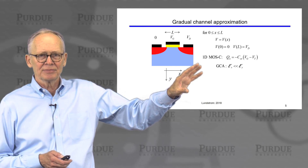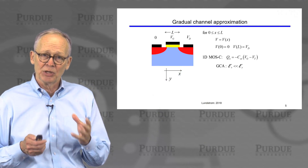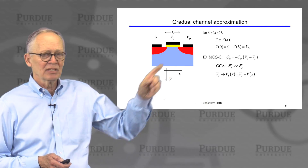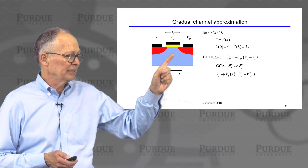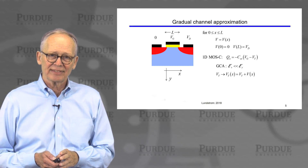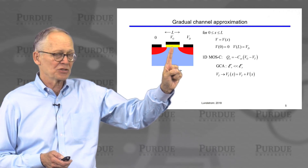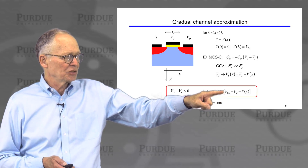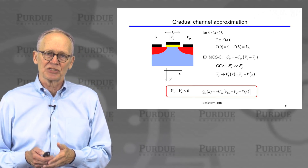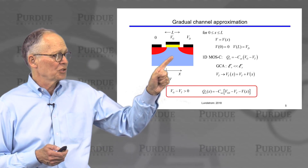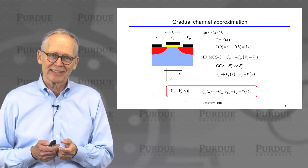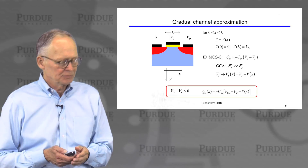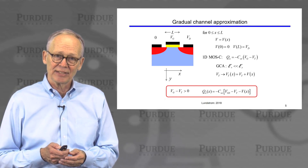Under the gradual channel approximation, the results should be very much like those for the one-dimensional MOS capacitor. The one thing to account for is that as I move down the channel, the voltage underneath the gate increases from zero to the drain voltage. At each point, I use a one-dimensional solution but with a different voltage in the silicon underneath. So instead of just V_G minus V_T, I now subtract the local channel voltage. A positive voltage near the drain works against the gate voltage and gives less charge in the channel.